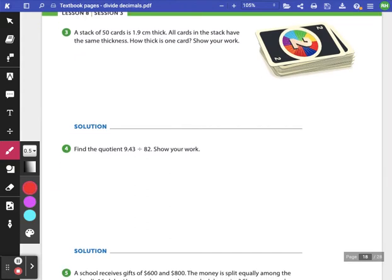Number three – a stack of 50 cards is 1.9 centimeters thick. All the cards in the stack have the same thickness. How thick is one card? Show your work. So I like to ask my students, how do we know which number goes inside the box and which goes outside? The larger number does not always go inside the box. So we really have to think about, am I splitting up the 50 cards or am I splitting up the thickness? So since it asks how thick is one card, I know that I'm taking the thickness of all the cards and I'm dividing that up. And it says I have 50 cards.